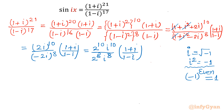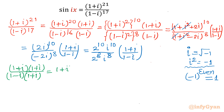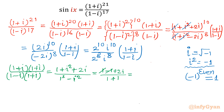Now let's find the value of (1+i) over (1-i) separately. I will rationalize it: multiply numerator and denominator by the conjugate (1+i). So the numerator becomes (1+i)^2 = 1 + i² + 2i, and the denominator is a difference of squares: 1² minus i². So we get (1 - 1 + 2i) divided by (1 + 1), which is 2i over 2.